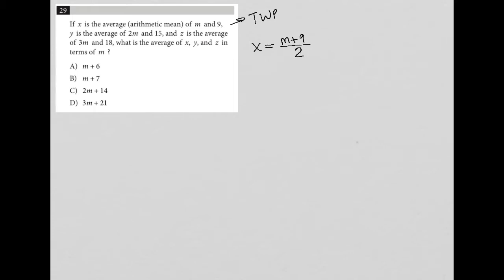And it says y is the average of 2m and 15. So that means y is equal to 2m plus 15 divided by 2. And z is the average of 3m and 18. So 3m plus 18 divided by 2 equals z.